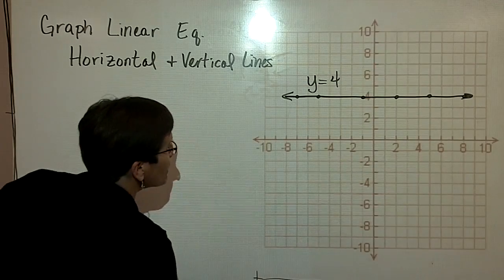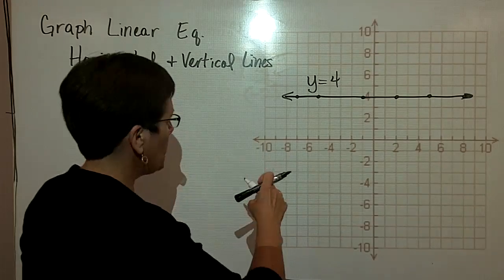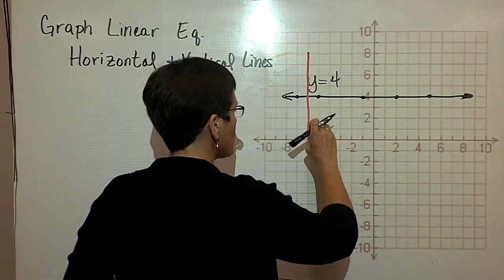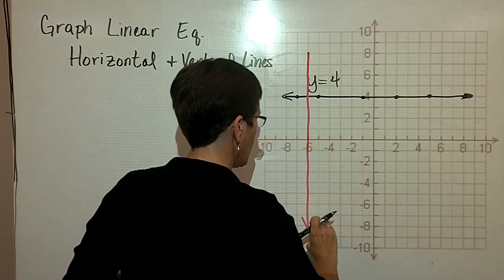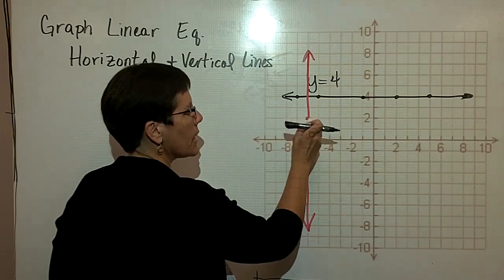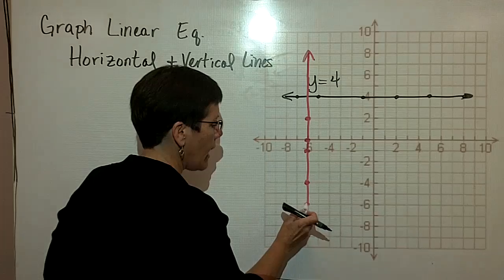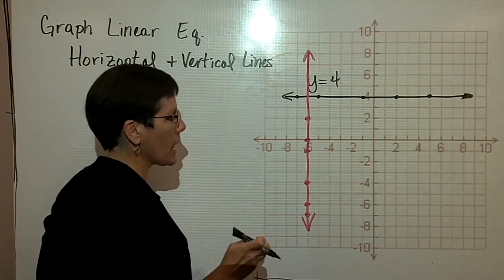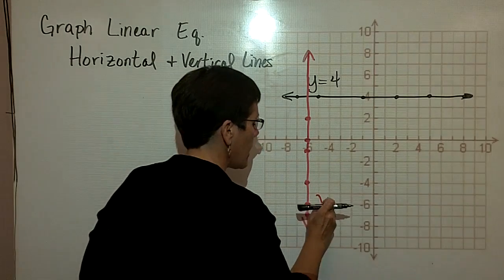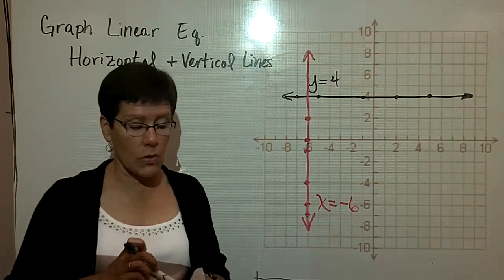And then finally, if I were to give you this equation in red, and ask you to tell me the name of that equation, I would just ask you to recognize that all these ordered pairs just have one thing in common, and that is their x value. And the x value for all those ordered pairs is x equals negative 6. That's the equation for that line as well.